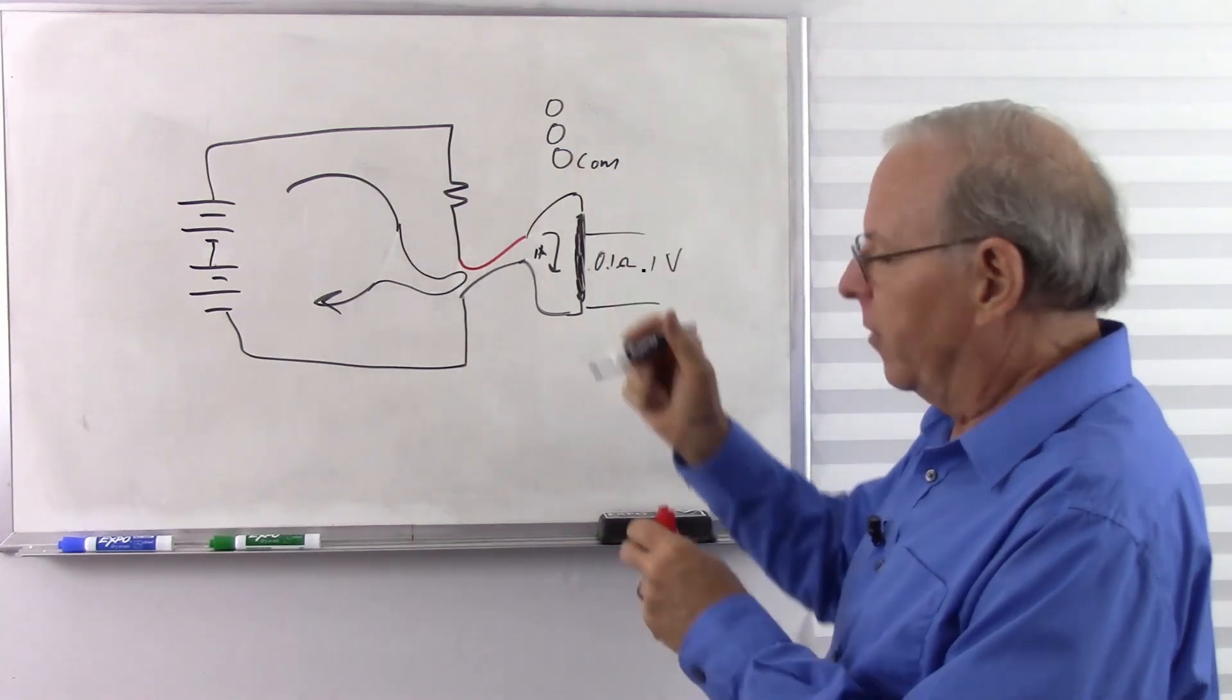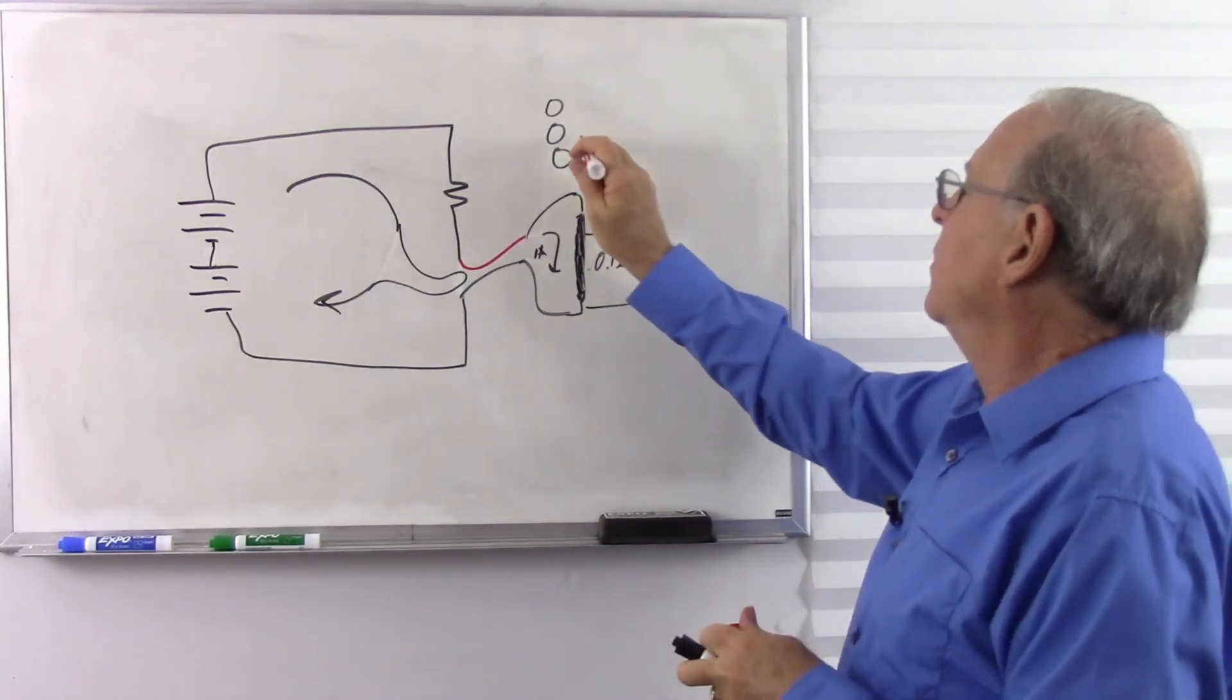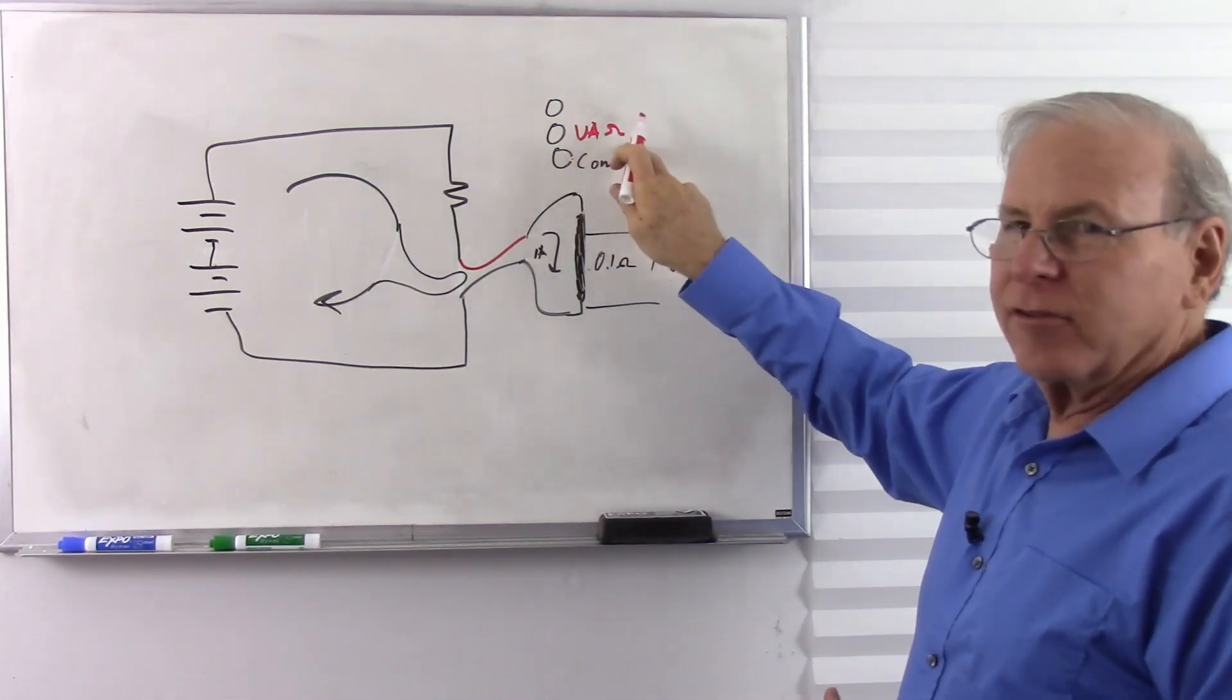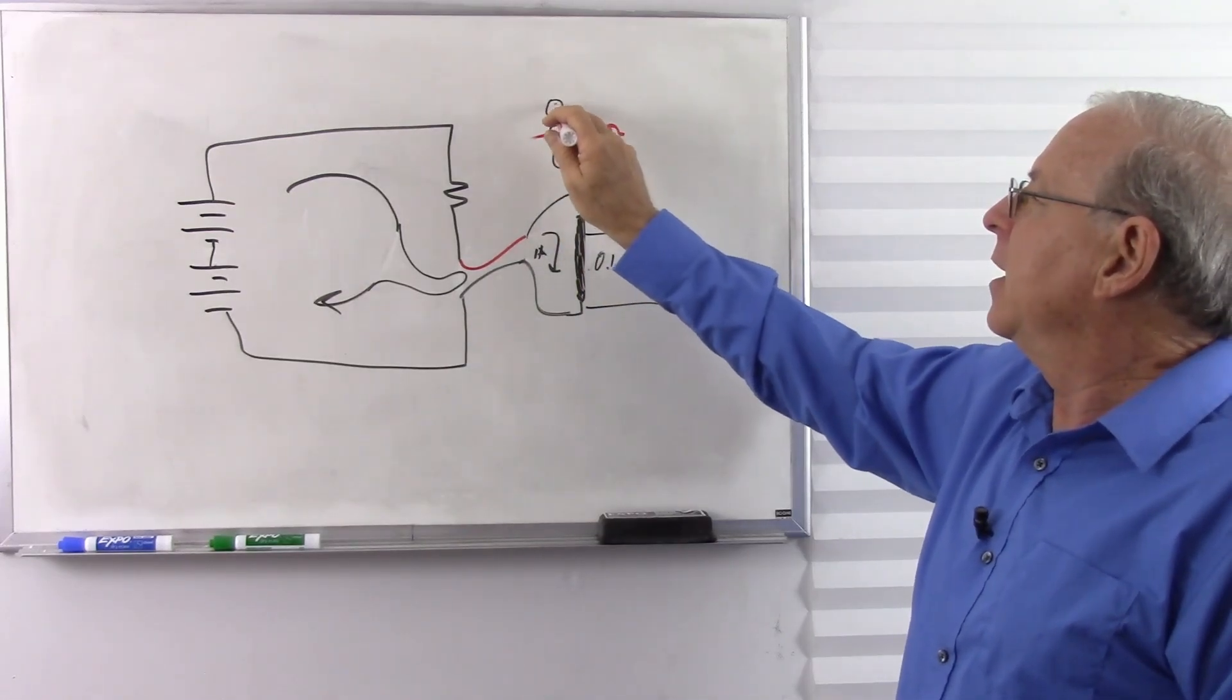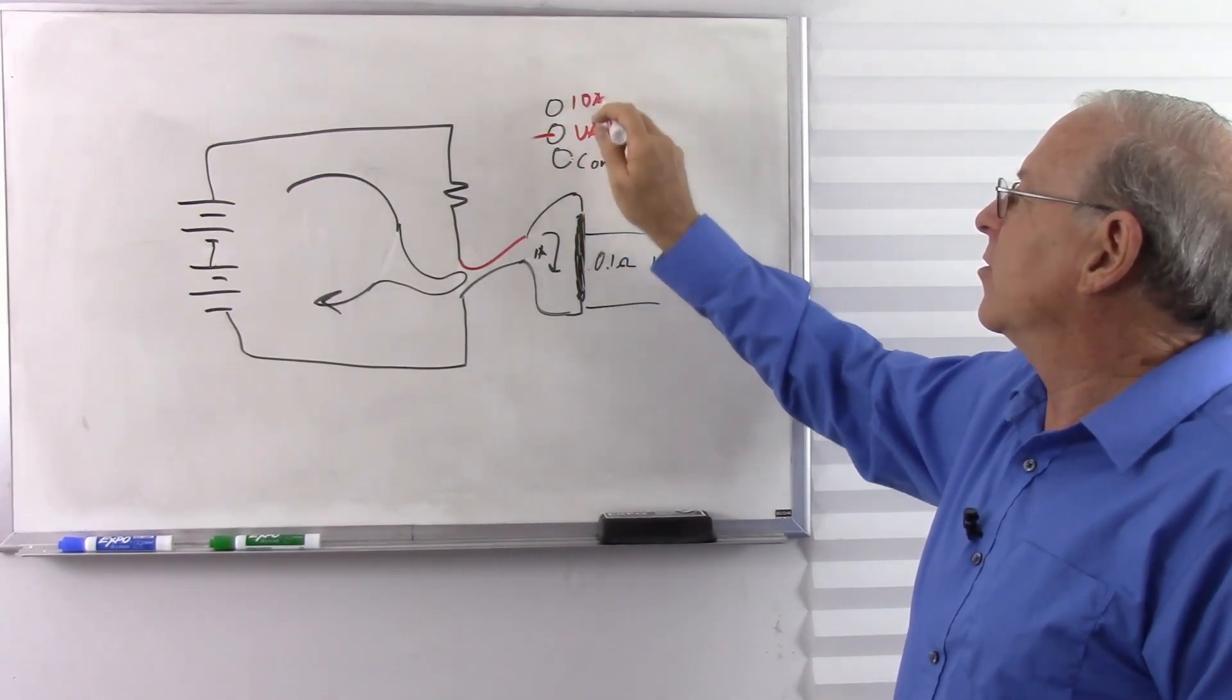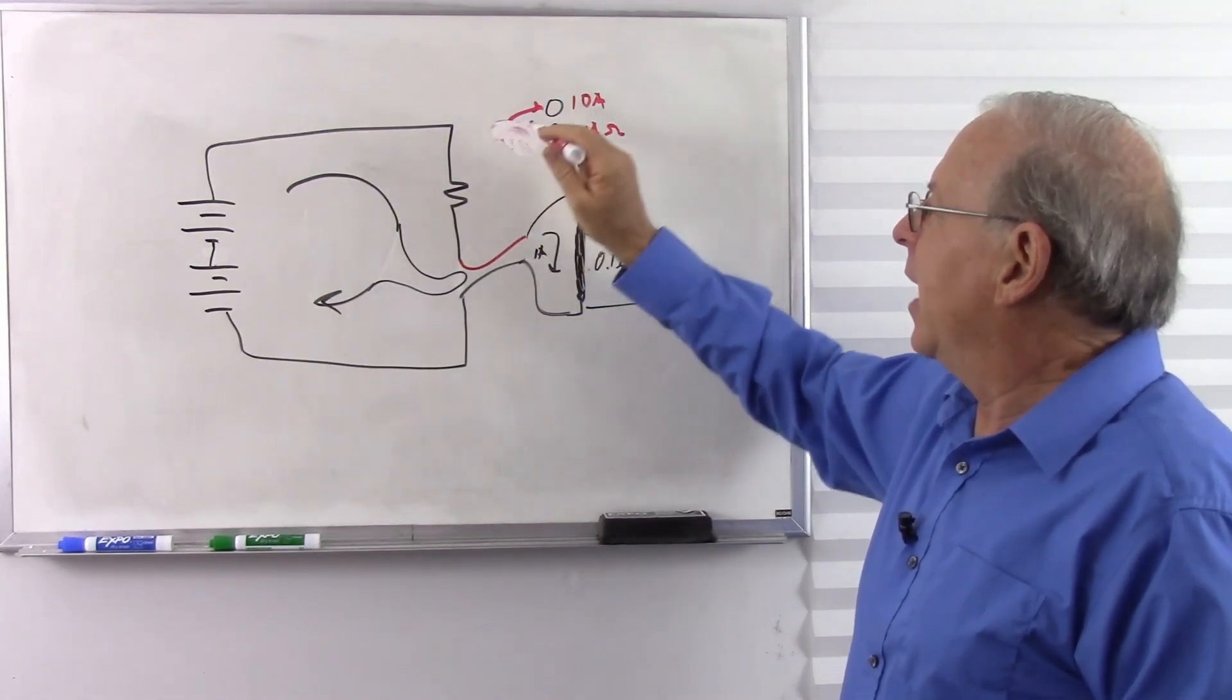The thing to remember there is when you're using the high current mode, a lot of meters have three inputs. One says common or COM, that's where the black lead goes. The other one says probably VA omega for volts, amps, and ohms. That's where the red lead goes. But if we want something like 10 amps, we move the red lead over to there to read the high current.